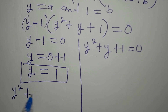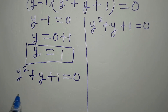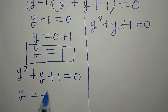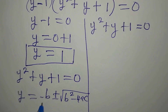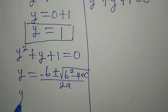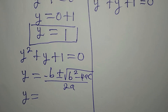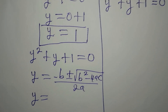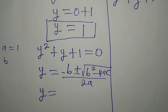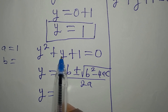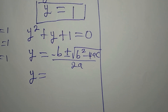Let's use the quadratic formula for y² + y + 1 = 0. The formula is y = (-b ± √(b² - 4ac)) / 2a. Before substituting, we identify our coefficients: a = 1 (coefficient of y²), b = 1 (coefficient of y), and c = 1. So a, b, and c are all one.